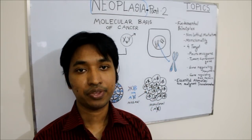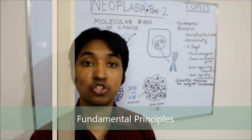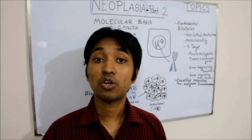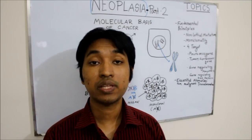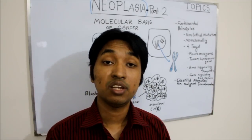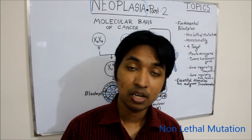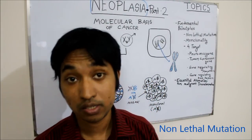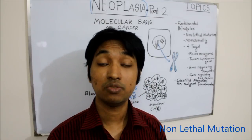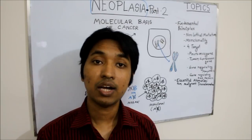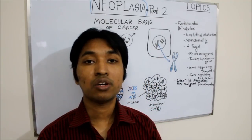In the second section we will discuss briefly about some essential alterations that are needed to transform a normal cell into a cancer cell or malignant cell. And in the last section I will draw a simplified flowchart to show you a simplified overview about the molecular basis of cancer. So first we are starting with the fundamental principles. If you ask me what lies at the heart of carcinogenesis from a molecular point of view, I have to say that non-lethal mutation lies at the heart of carcinogenesis.